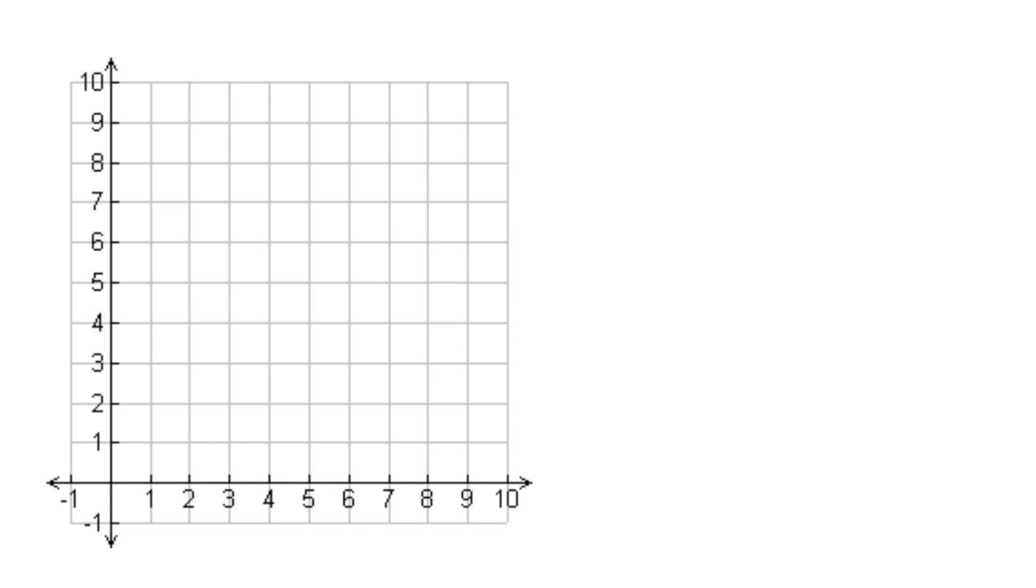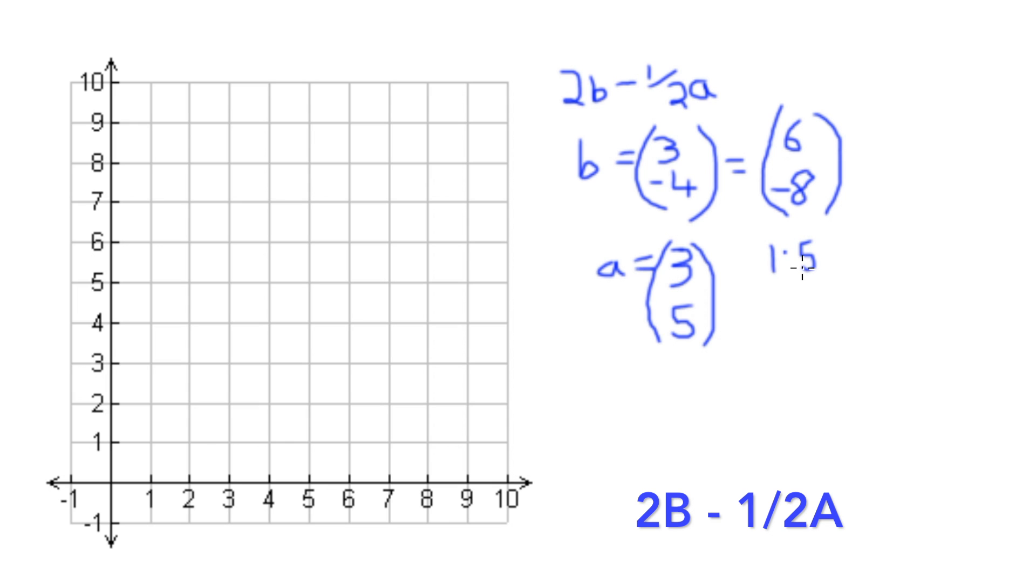In our final example, we'll use a combination of the problems we've worked with before, and work out 2B minus half A. To get those extra working out marks, and to make it easy for yourself, we'll write out our original B column, which we know as (3, -4), with a scalar of 2, meaning times 2. If we do this, we arrive at (6, -8), which simply doubles the B line length. Our scalar of half means that our original (3, 5) for our A vector becomes (1.5, 2.5). Remember to draw the B line first, as the equation is B minus A, and accordingly, the arrows will again have to be aiming at each other.